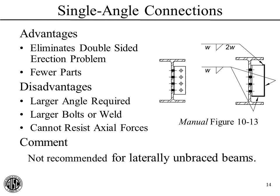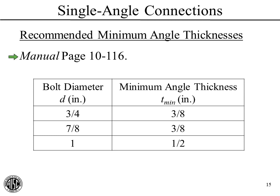Starting off with the very basics in the manual, we have guidance for these kinds of connections starting around page 10-116. The first thing to discuss is recommended minimum angle thicknesses, which is a function of the bolt diameter. For three-quarter inch or seven-eighths inch bolts, the minimum recommended angle is three-eighths of an inch thick. For one-inch bolts, the minimum is one-half inch thick.